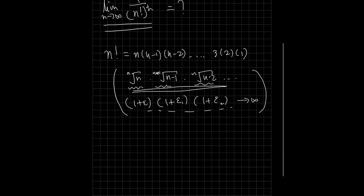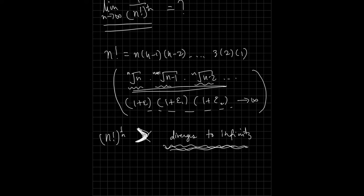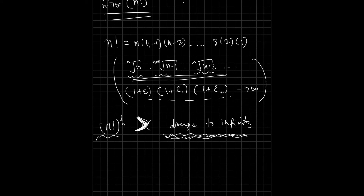To show that the nth root of n factorial approaches infinity, I have to find another expression that is divergent — that diverges to infinity. So my goal is to find this expression that diverges to infinity and is less than this expression.